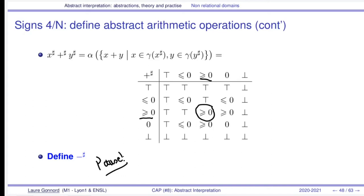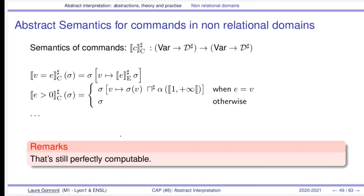Now that we have expressions, we can define the abstract semantics of commands. The semantics of a command takes a valuation in the abstract world and gives a new valuation in the abstract world. When assigning to variable v a new arithmetical expression e, we evaluate this expression inside the abstract world and modify the current abstract valuation to put the new value for v.